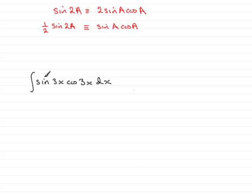And so if I compare this to sin a cos a, you can see that the a is the 3x. So what this will reduce down to is a half sin of twice 3x, in other words, half sin 6x.